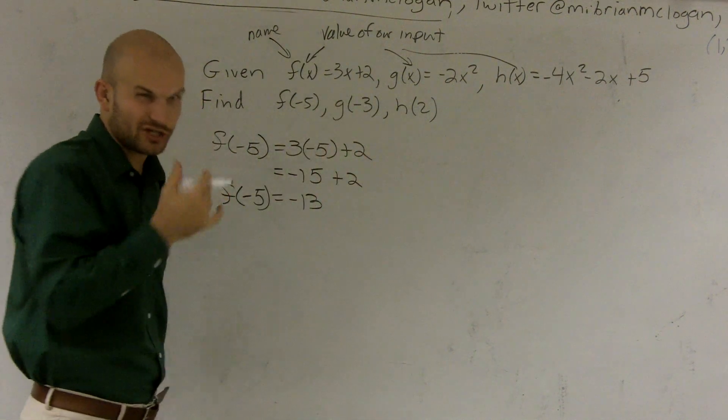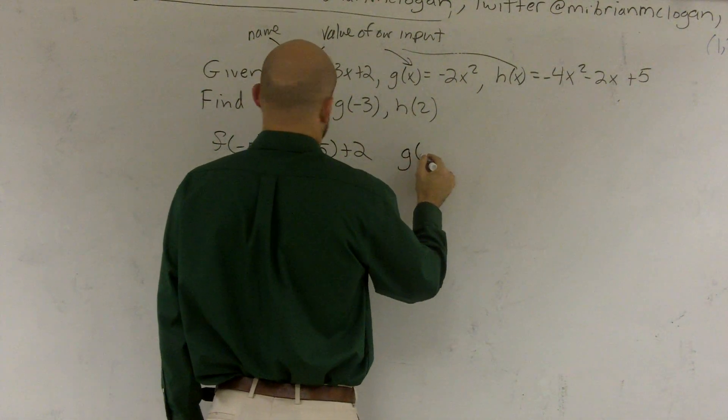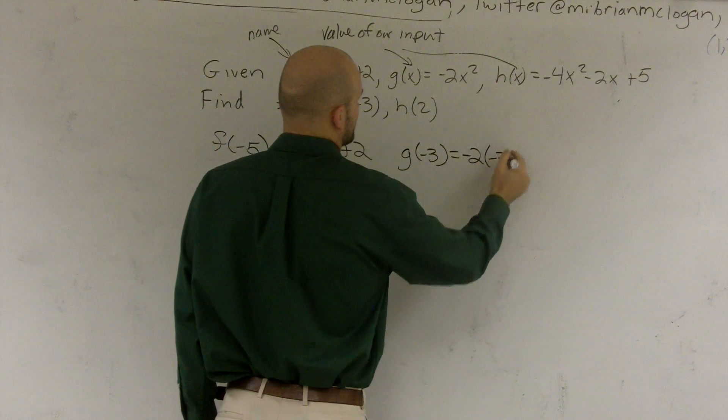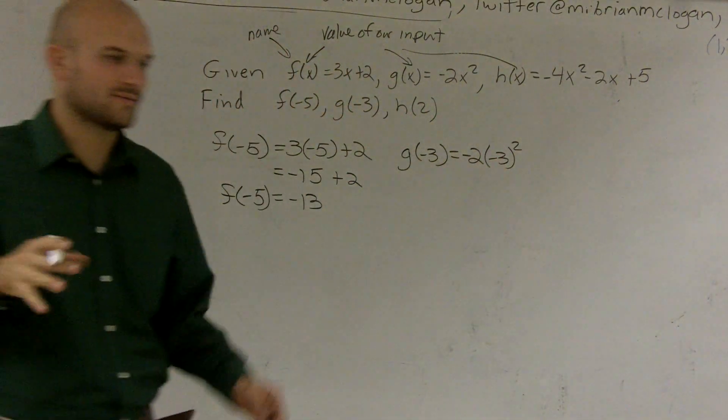Now, if we move on to Grant, so g of negative 3 equals negative 2 times negative 3 squared. And guys, it's really important. I really like to put, whenever I'm inputting,